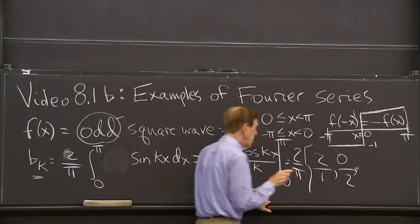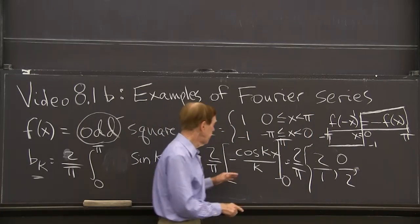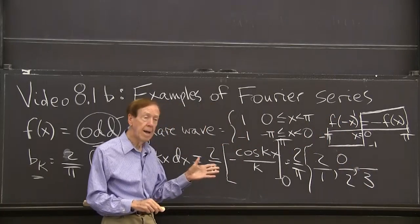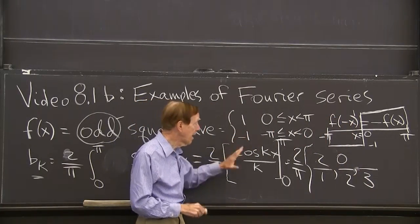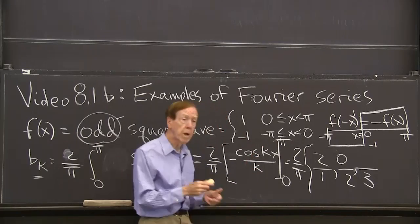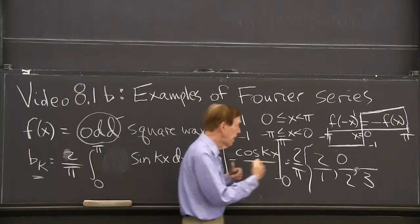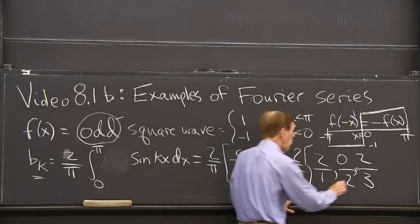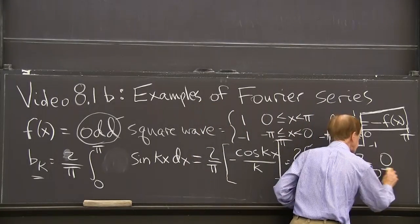Now I go to k equals 3. So the k equals 3 will come down here. And now when k is 3, it turns out I get, they don't cancel. They reinforce. I get another 2. Good if you do these. And when k is 4, I get a 0 again. You see the pattern?